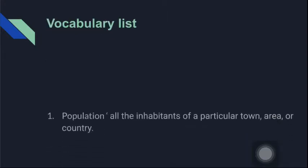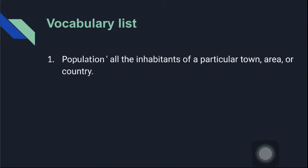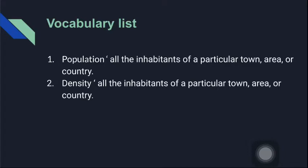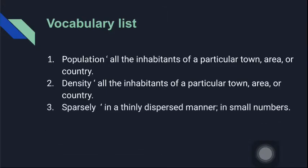Our vocabulary list: number one, population — all the inhabitants of a particular town, area, or country. Number two, density — all the inhabitants of a particular town, area, or country where the maximum number of people are living. Number three, sparse — in a thinly dispersed manner.